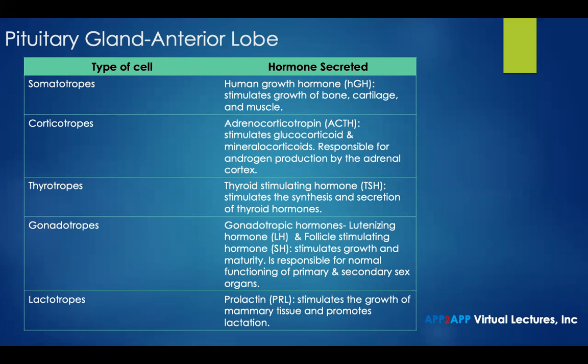Somatotropes are responsible for the secretion of human growth hormone, which stimulates growth of bone, cartilage, and muscle. Corticotropes secrete adrenocorticotropin, which stimulates glucocorticoids and mineralocorticoids, both responsible for androgen production by the adrenal cortex. Thyrotropes secrete thyroid-stimulating hormone, which stimulates synthesis and secretion of thyroid hormones.